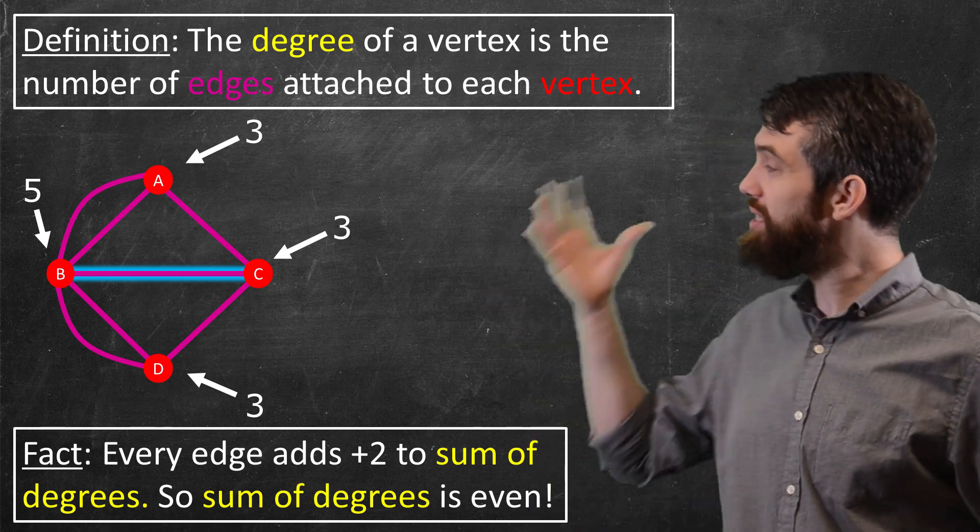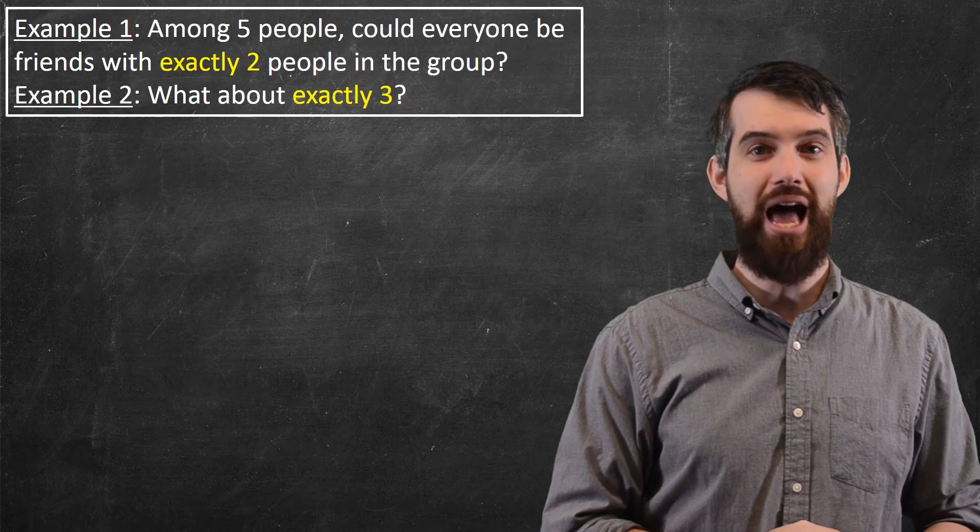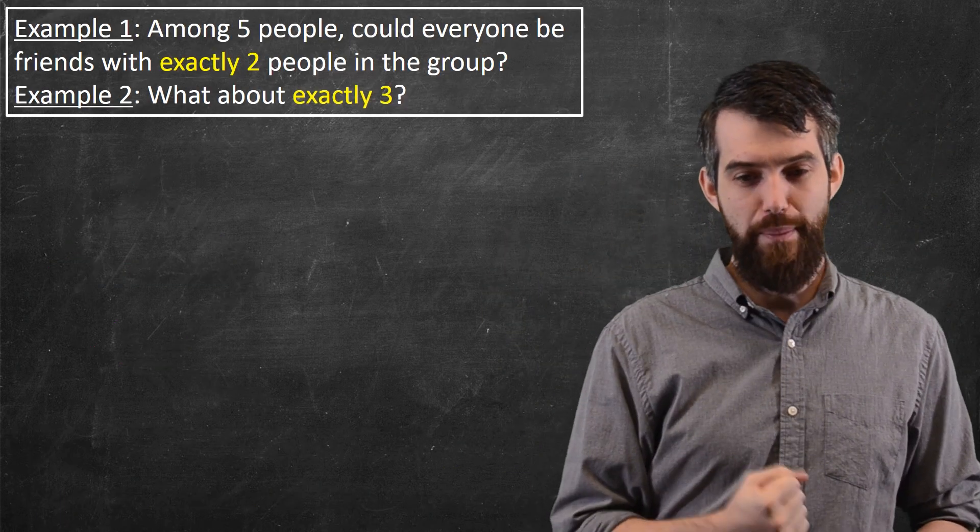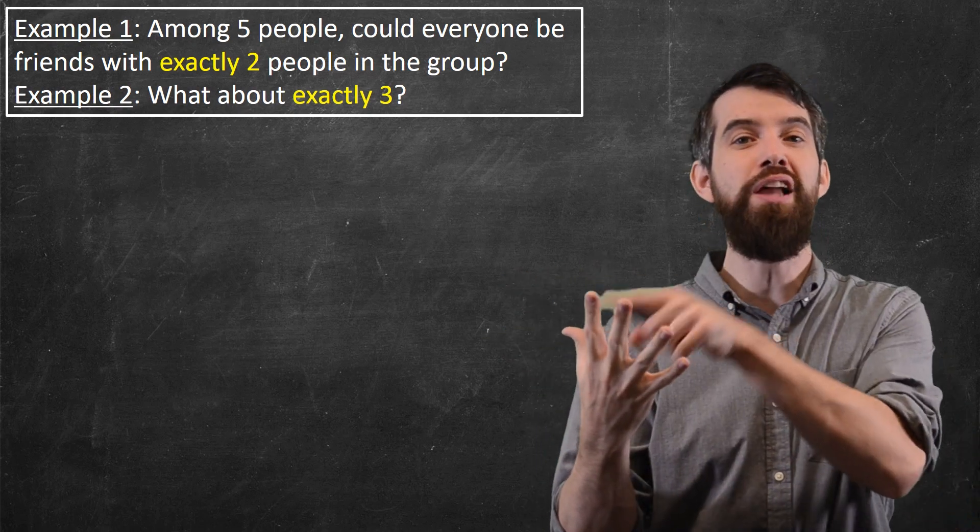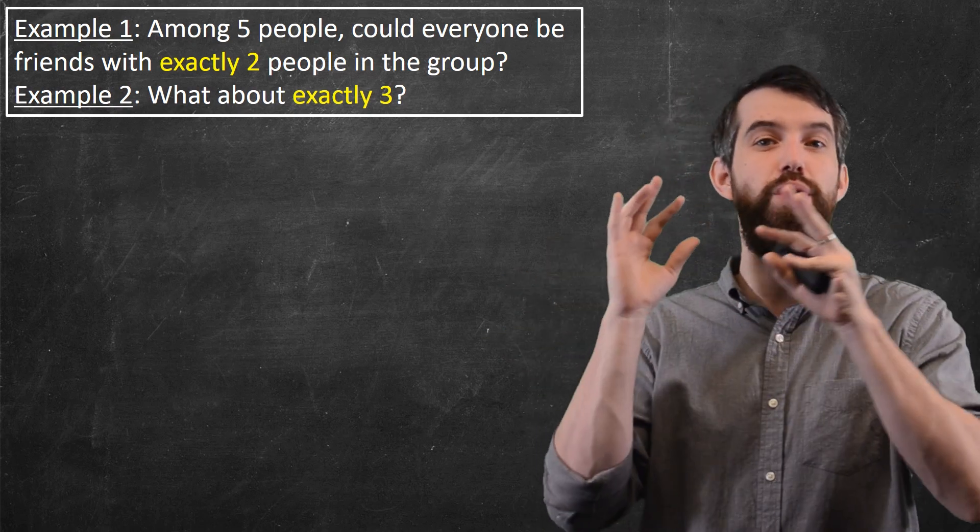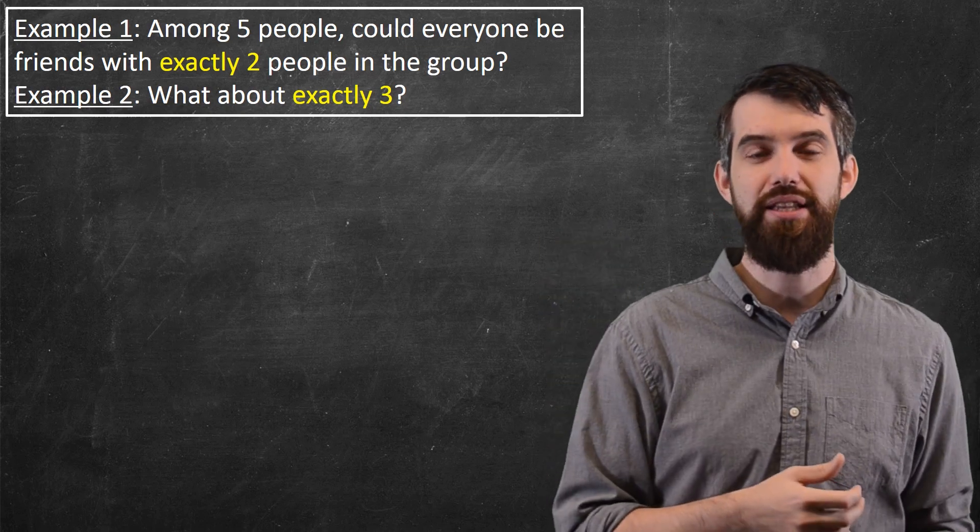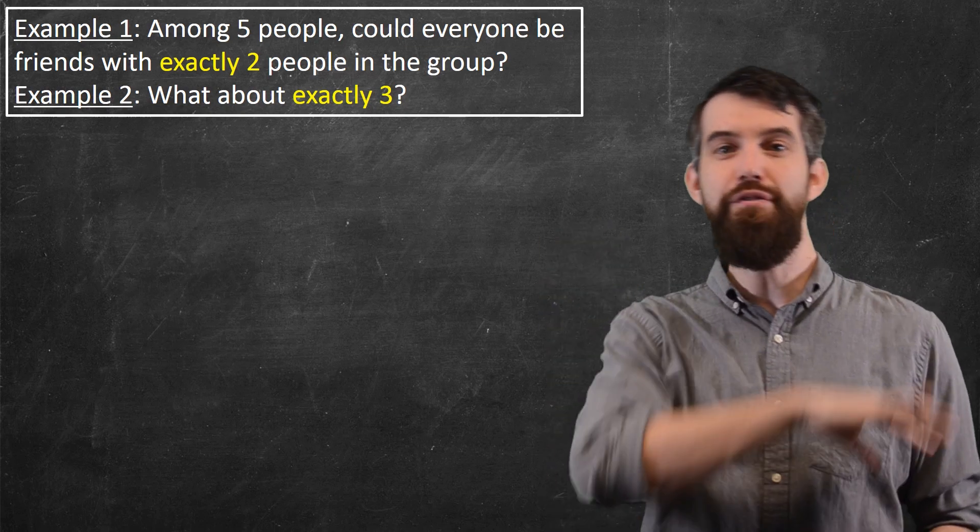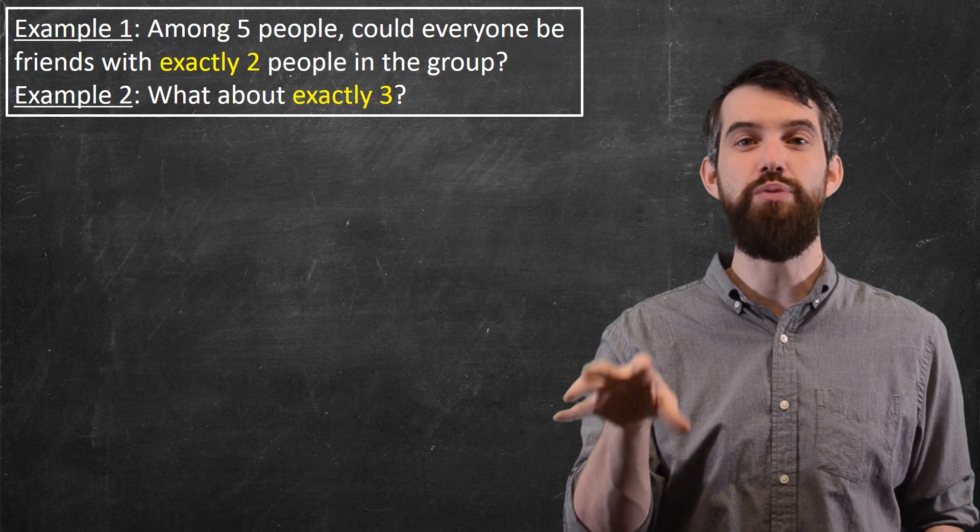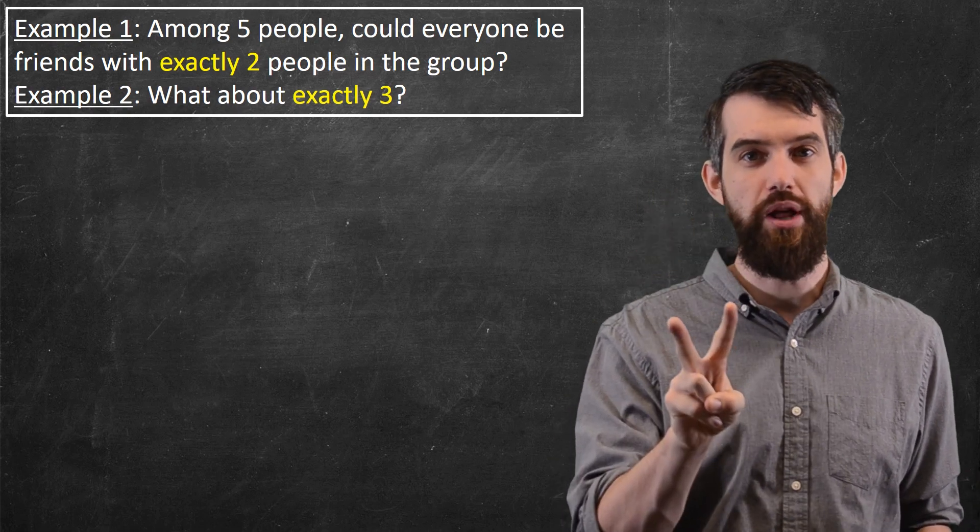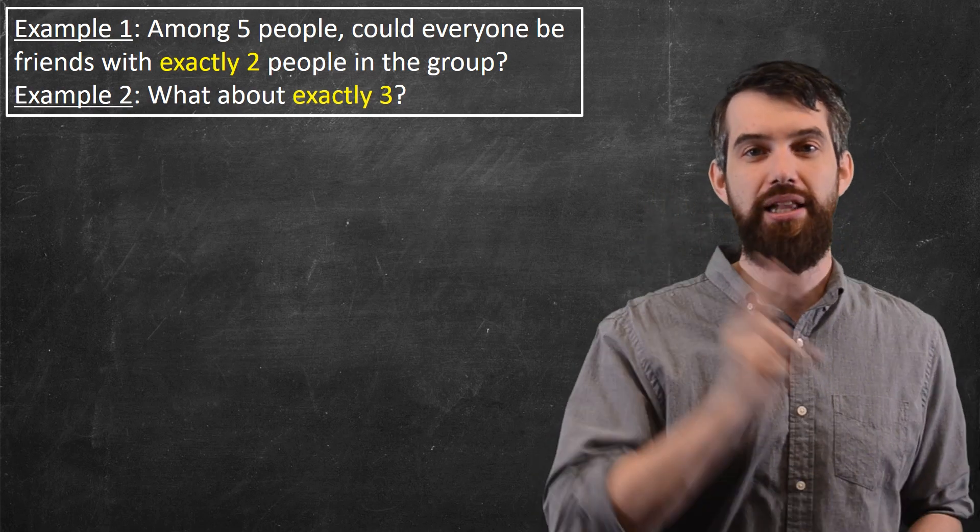So, for example, consider these two pairs of examples. I've got five people. And among those five people, there's different friendships between them. Some of them are friends, and some of them are not friends. And the first question I'm going to ask is, is it possible that everyone in those five people is friends with exactly two other people? Not three, not one, exactly two.